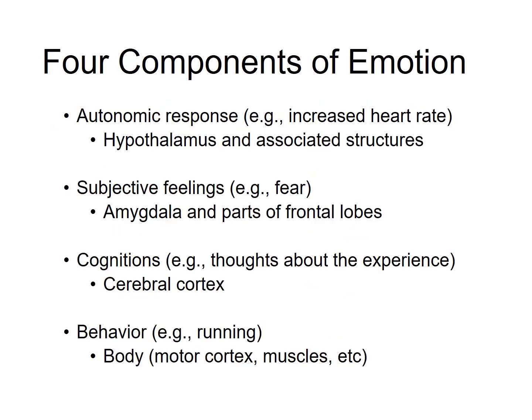There are at least four components of emotion. First, the autonomic response, such as increased heart rate, involving the hypothalamus and associated brain structures. You have the subjective feelings, such as fear, involving specific brain structures such as the amygdala and parts of the frontal lobes. You have the cognitions — what you're thinking about the experience — involving the cerebral cortex. And you have behavior, which might involve running away, and this involves the body, the movement, the muscles, and the motor cortex.